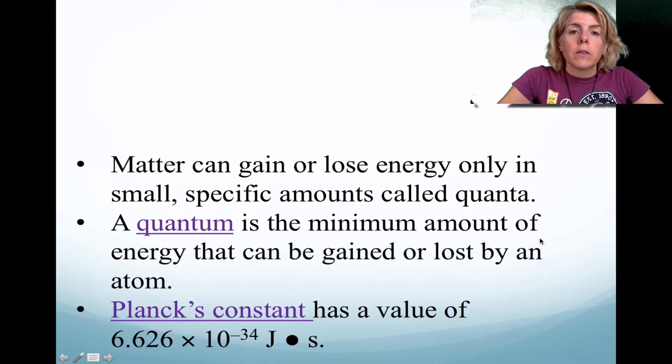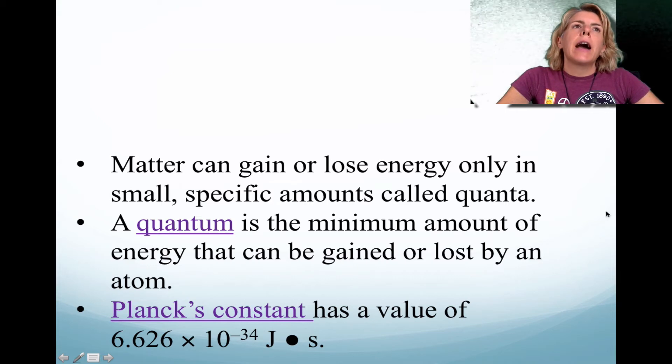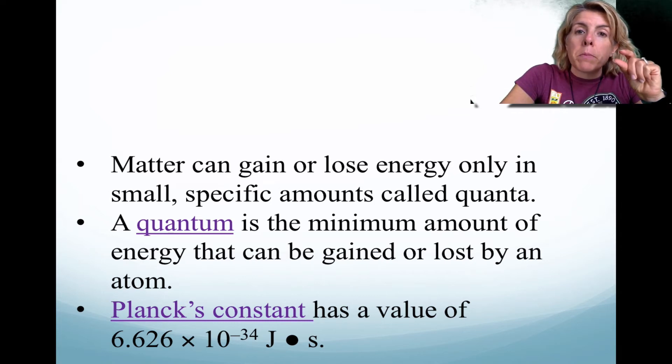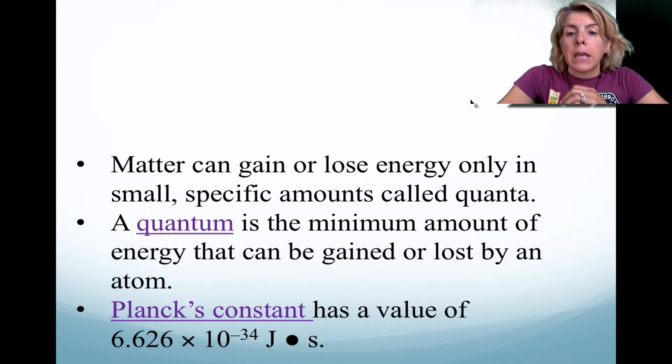Okay, so what does this mean? Well, matter can gain or lose energy, and it's not a continuous amount of energy. So there's actually a limit to how much energy it can gain or lose. Now scientists called this a quantum. That is the minimum amount of energy that can be gained or lost by an atom. And there was a physicist by the name of Max Planck who came up with a constant. And we'll see how that relates.